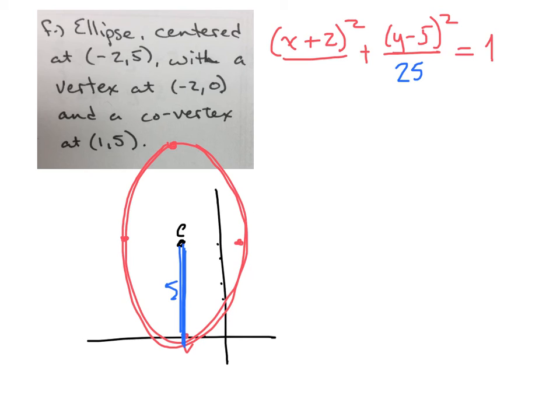For the co-vertex, this is in the x direction. And to get from the center at negative 2, 5 over to the co-vertex at 1, 5, that's 3 units away in the x direction. So we're going to square that and put it underneath the x fraction.